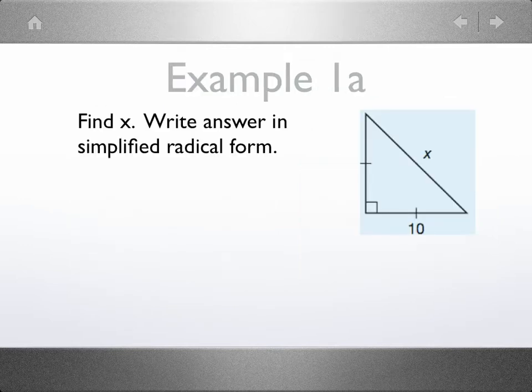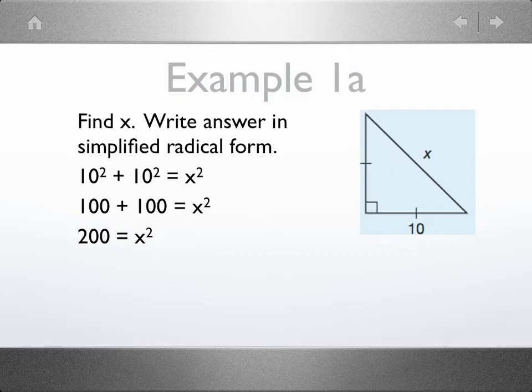In your first example, we're asking you to find x, but to write your answer in simplified radical form. Notice it's an isosceles triangle, so we start with 10 squared plus 10 squared equals x squared. Now we're going to square those numbers, combine like terms, take the square root of both sides. And now simplify your radical by thinking of 200 as 100 times 2, where the 100 is a perfect square. So there is the answer in simplified radical form.